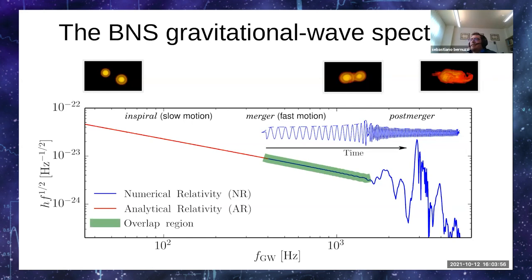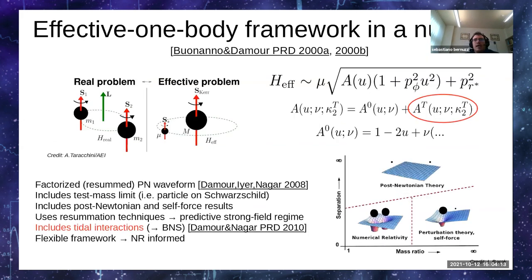The post-merger prediction can be obtained only with numerical relativity simulations. I will discuss how we have obtained a complete model for the spectrum, and the framework we use is the effective one-body approach that allows us to combine post-Newtonian, test mass, and gravitational self-force results.